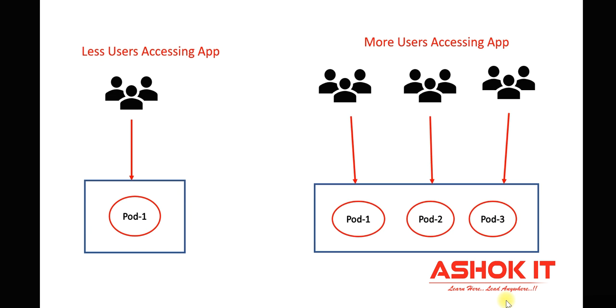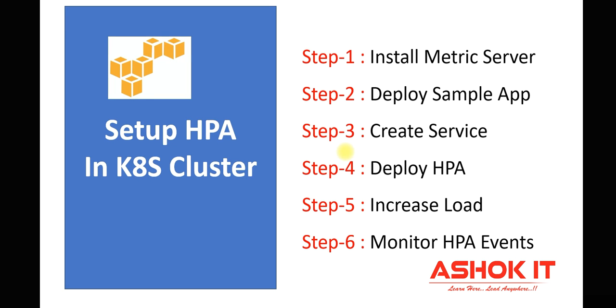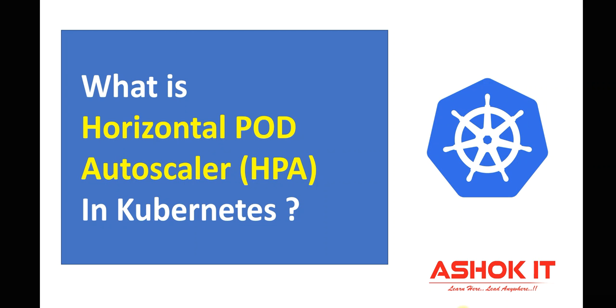When fewer users are accessing our application, one pod executes. When more requests come and more load is there, the number of pods increases. The metric server we installed gathers statistics of our application and nodes and gives the information to HPA. In HPA, the CPU target percent is configured as 50 — if CPU exceeds 50%, HPA increases the pod count; if CPU utilization reduces, the number of pods reduces. You do not need to create or delete pods manually — automatically, pod autoscaler will identify when more pods are required and increase or decrease accordingly. This is horizontal pod autoscaler in Kubernetes. Thanks for watching. Please like and subscribe to our channel for more updates.